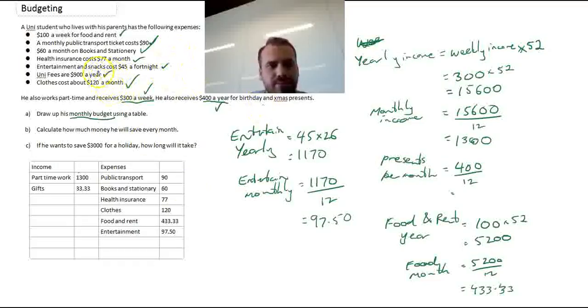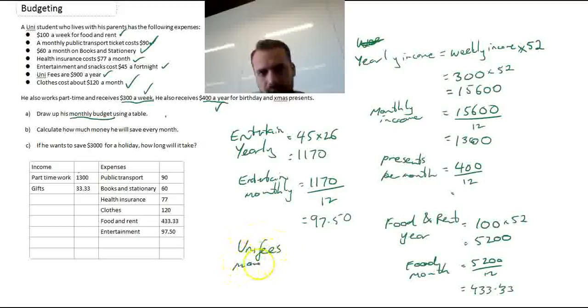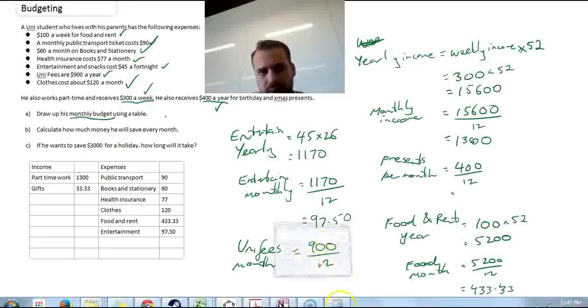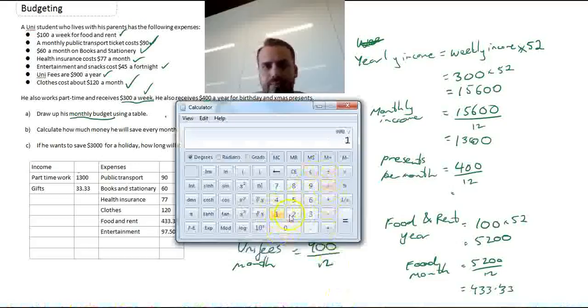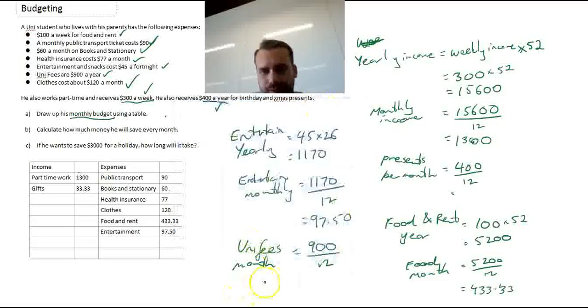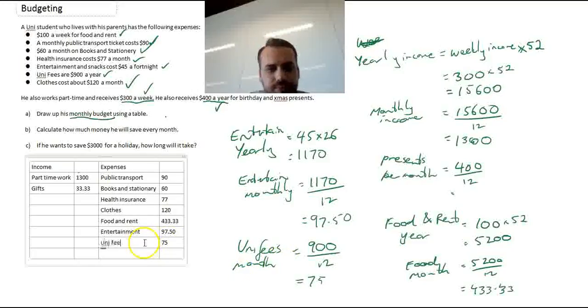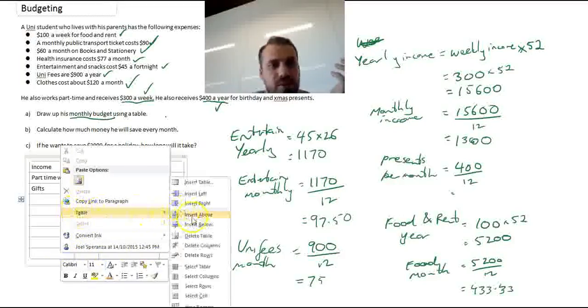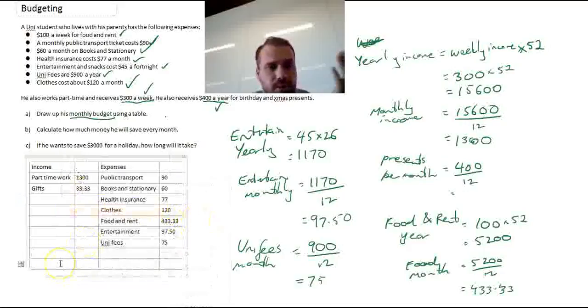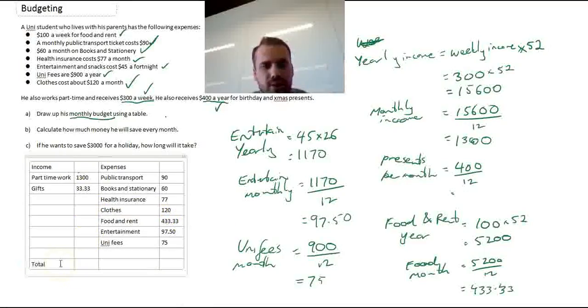Last one. Uni fees are $900 a year. Uni fees for a month. If it's $900 per year, a month is going to be $900 divided by 12. That's $75. And that was uni fees. We're doing really well here. I know it looks like a lot of work, but remember, this is really something that, if you're going to be smart with money when you finish, it's certainly something that you're going to want to do.